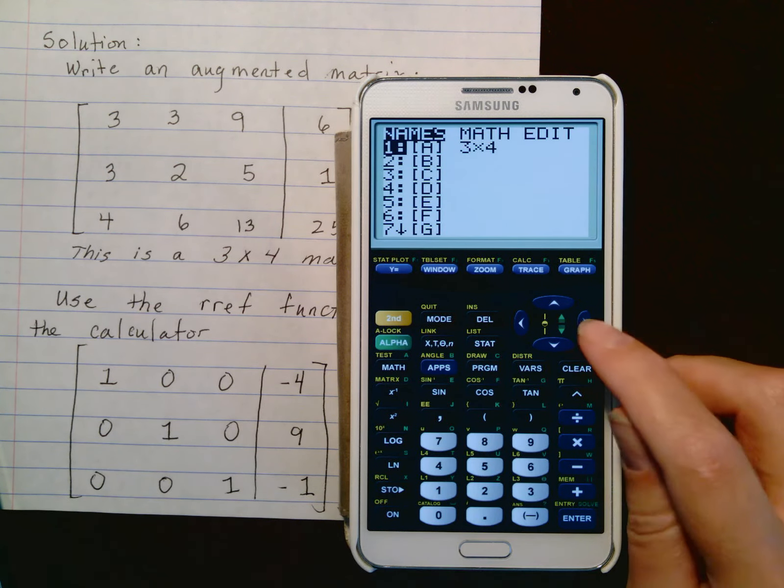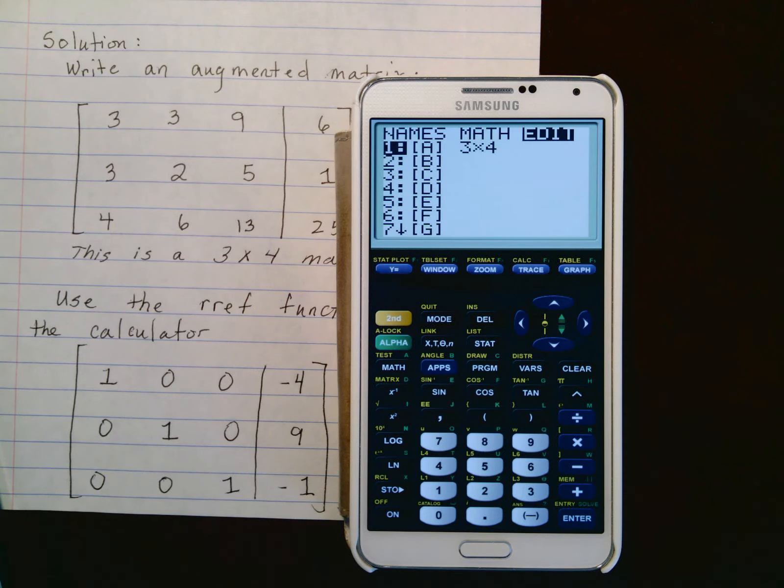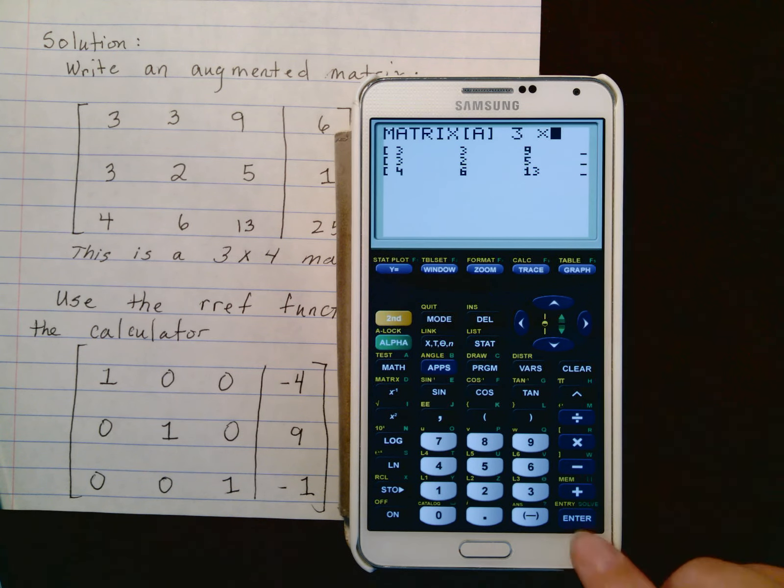We have to start by entering our matrix by going to the edit screen. Under the edit screen, you select the matrix and you enter the dimensions. So this is a 3x4, which I've already entered, three rows and four columns. Just hit enter to get to each entry.